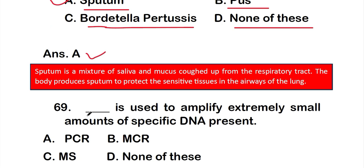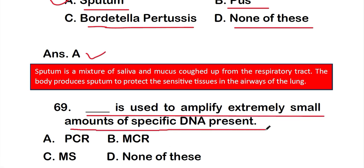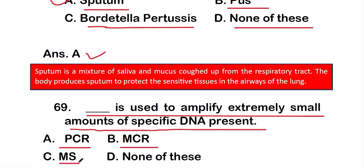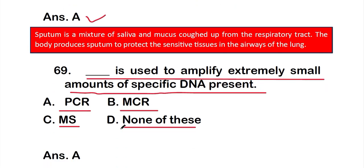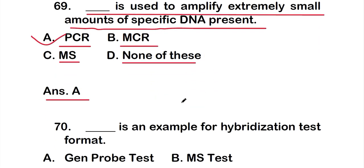Question 69: Dash is used to amplify an extremely small amount of specific DNA present — options: A: PCR, B: MCR, C: mass spectrometry, D: none of these. The right answer is option A, PCR. This is a repeat of question 64.